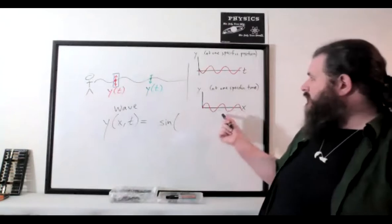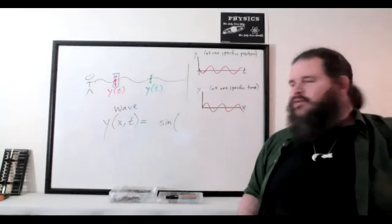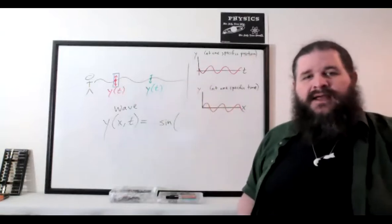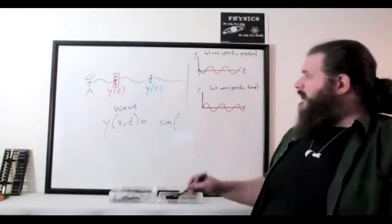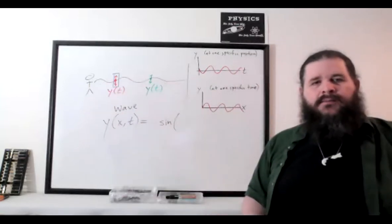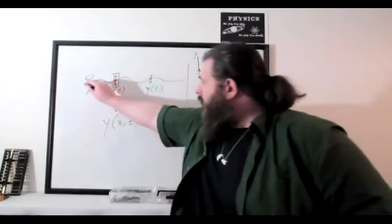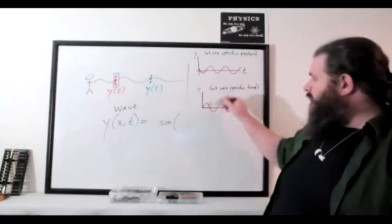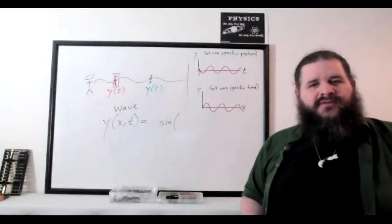The x versus y graph is literally just the shape of the rope at that instant in time. Of course, y doesn't have to represent height — y might represent pressure in a sound wave or in a longitudinal wave. In a transverse wave where the oscillations are perpendicular to the direction of travel, the y versus x graph really is just the shape of the wave.